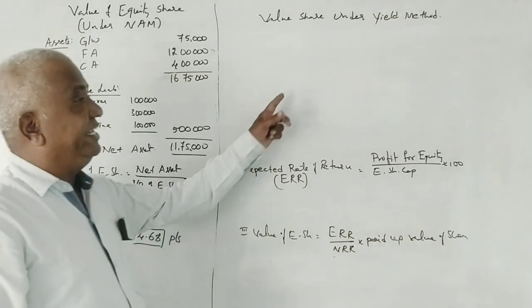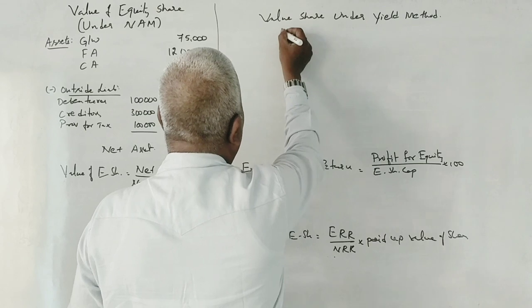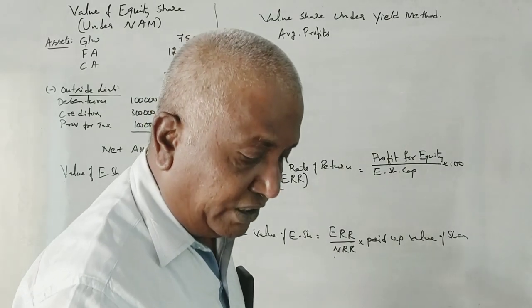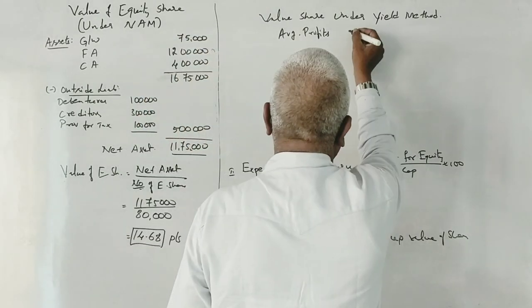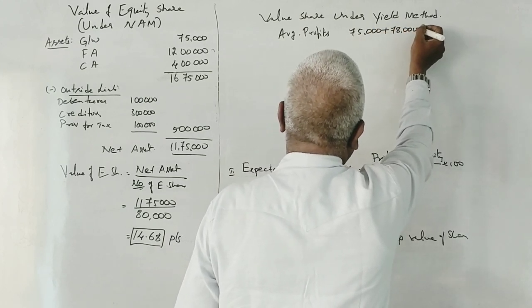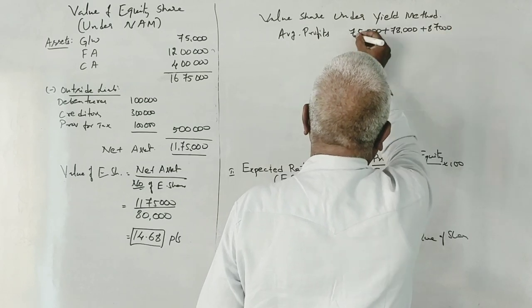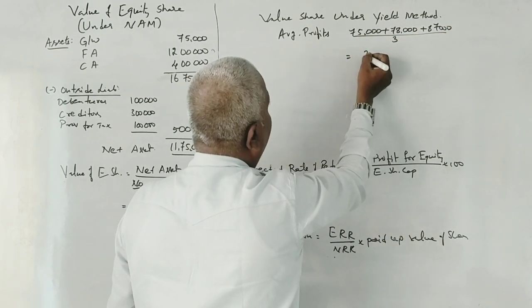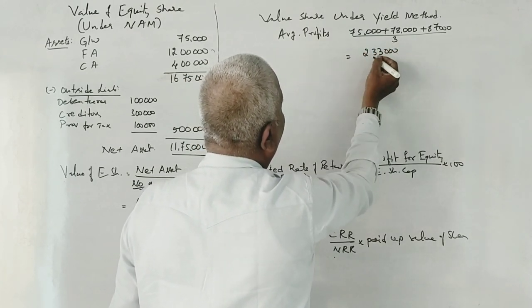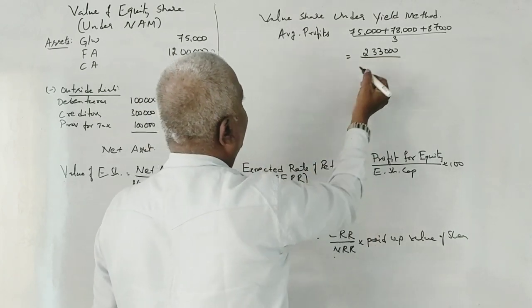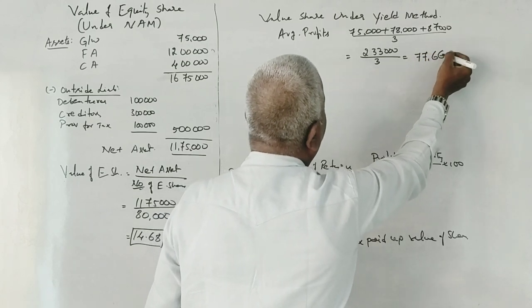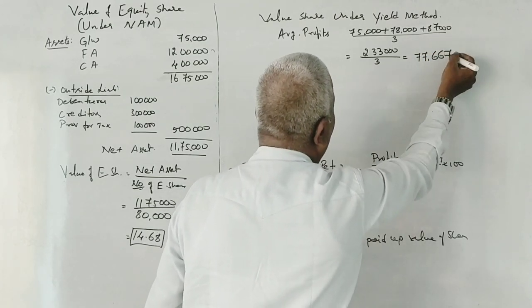Now, the yield method. First of all, the average profit. Three years of profit: 75,000, 78,000, and 87,000. Total 2,40,000 divided by 3 equals 80,000.